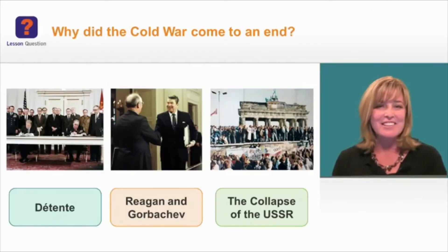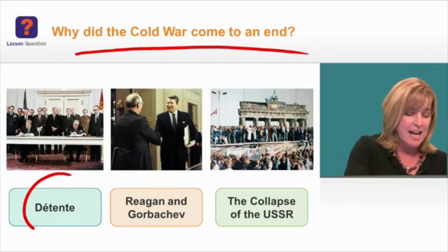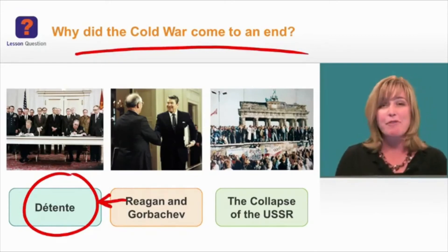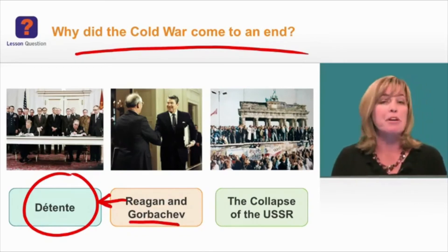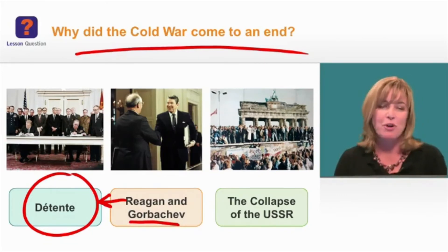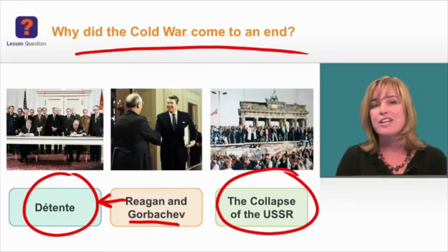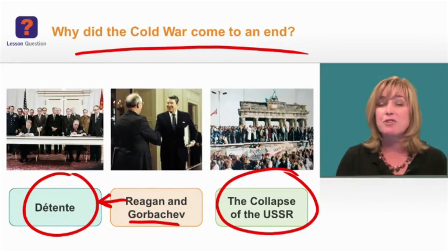Let's check in and take another look at our lesson question: why did the Cold War come to an end? You now know about detente and how President Reagan decided to abandon that program in an effort to win the Cold War. You also learned about Premier Gorbachev and the new programs he instituted to reform the Soviet Union — Glasnost and Perestroika. Now we're going to learn about how those new programs and the problems in the Soviet Union are going to lead to the collapse of communism, not just in the Soviet Union but in countries throughout Eastern Europe.